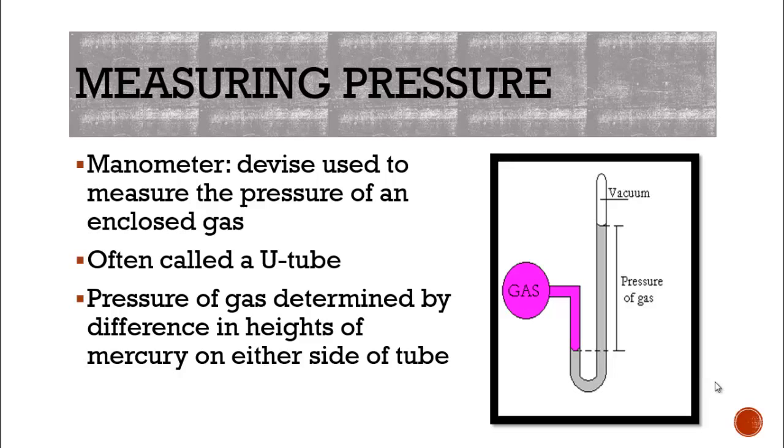Now the pressure of the gas then is determined by the difference in heights of mercury on either side of the tube. Again, because there is a vacuum at the top, the pressure of the gas pushes down inside the tube. Remember, if there was no pressure from the gas, then the two sides should be balanced out. However, as the gas pressure comes in, it moves down and pushes up the mercury on the other side.